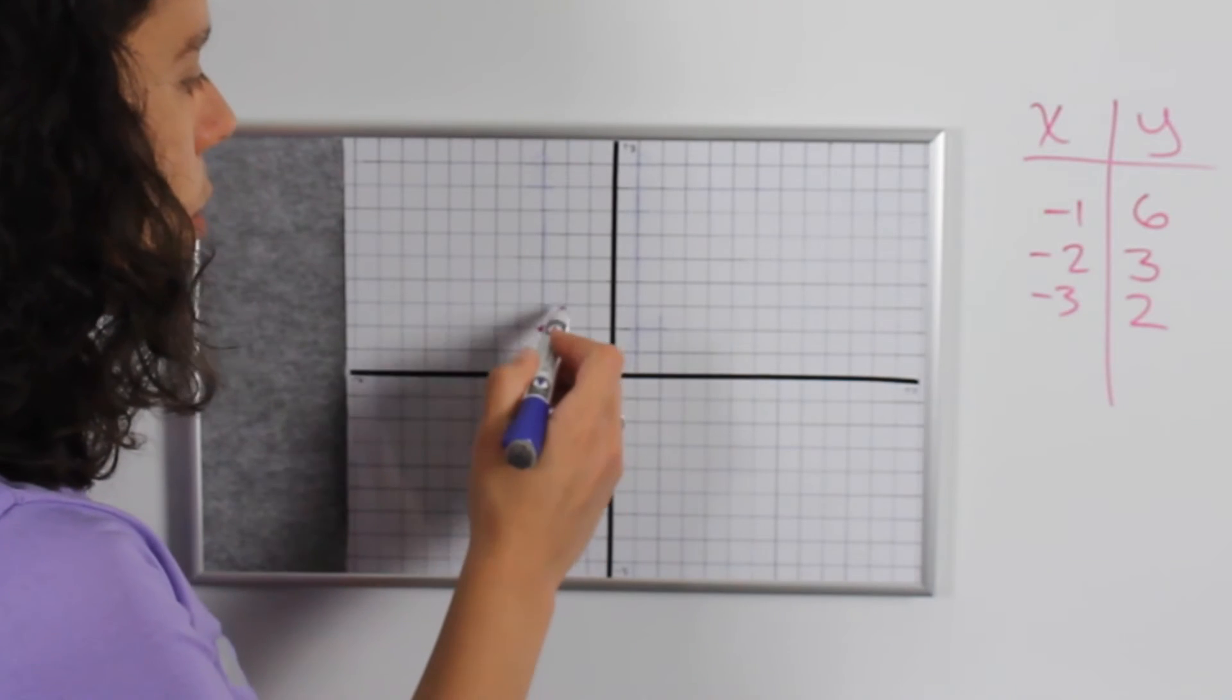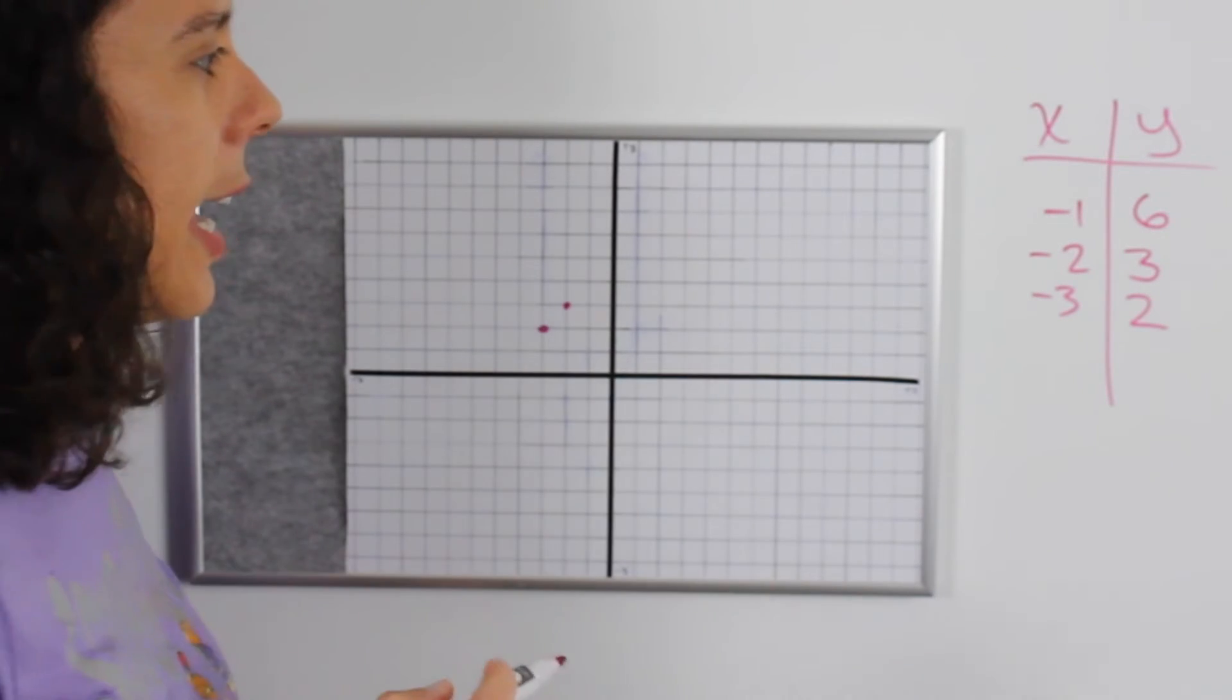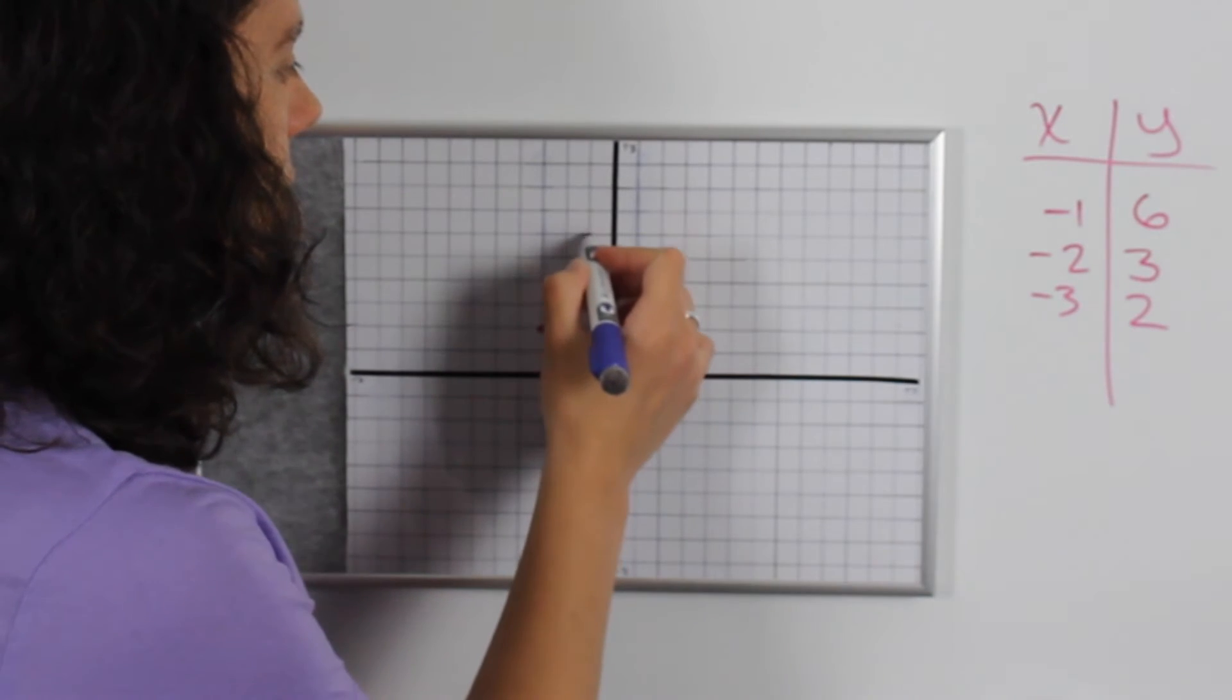We have negative two, three and negative one, six.